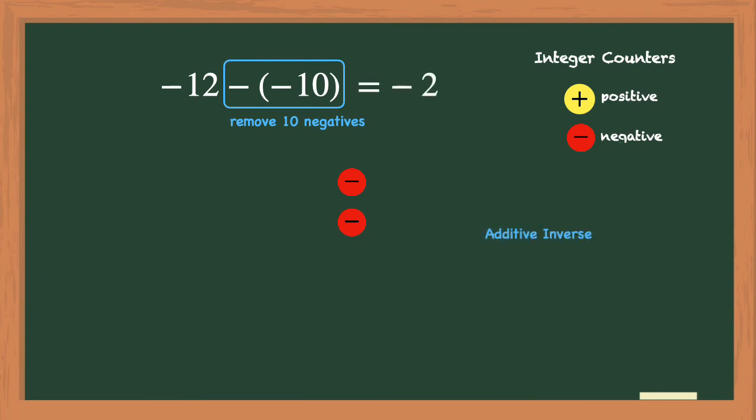Now let's use the additive inverse. We'll keep the negative 12, change the subtraction to addition, and then use the inverse of negative 10, which is positive 10. And negative 12 plus positive 10 is negative 2.